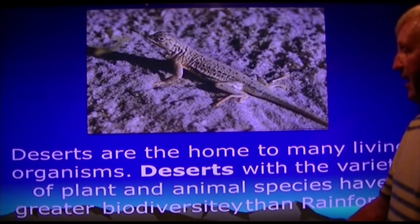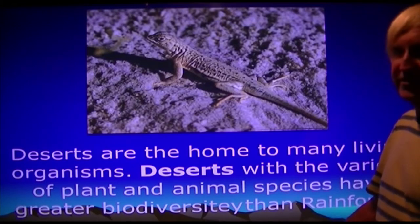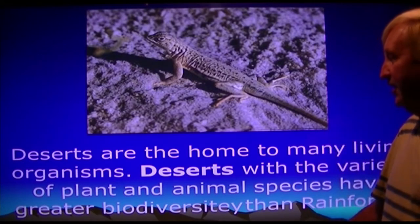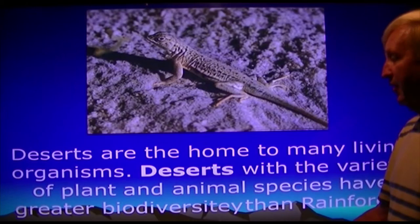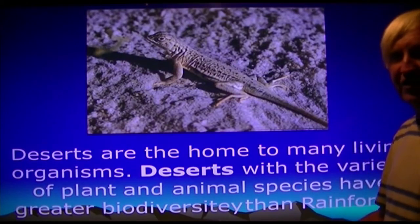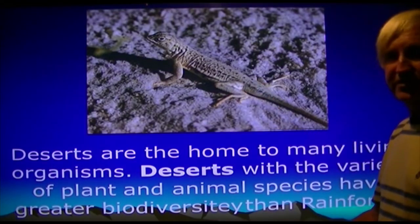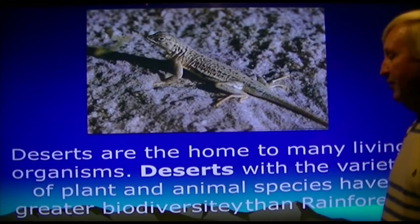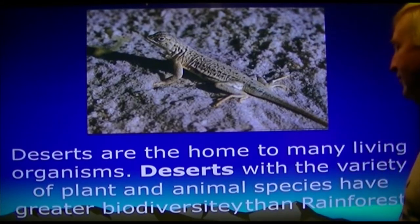Most animals that live in deserts are nocturnal. Especially in summer, you will not see a lot of life during the daytime. As the sun sets and it cools down, animals come out feeding. Desert plants and animals have adapted to harsh daytime temperatures and cooler evening temperatures. Reptiles like lizards regulate body temperature by basking in the sun when cold, and going into the shade when they start to overheat. In wintertime, many species tend to hibernate. Deserts are home to many living organisms with greater biodiversity than the rainforest.